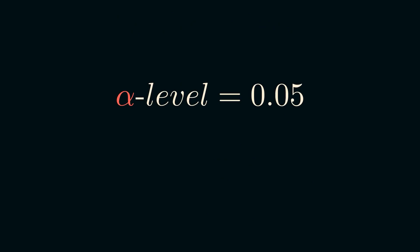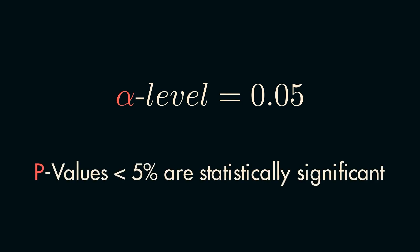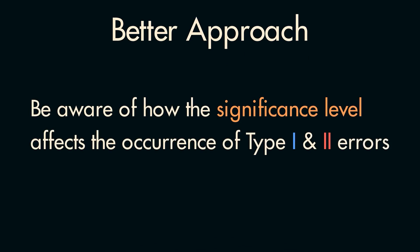That might lead you to see significance levels as a bit arbitrary, and truthfully they are to some degree. And the typical advice that P-Values below 5% are always statistically significant is a bit naive given that. A better approach is to be cognizant of your choice of significance level and how it affects the type and prevalence of random errors your statistical test makes.